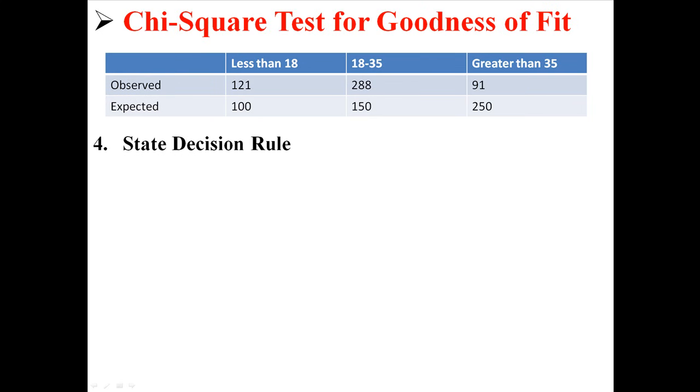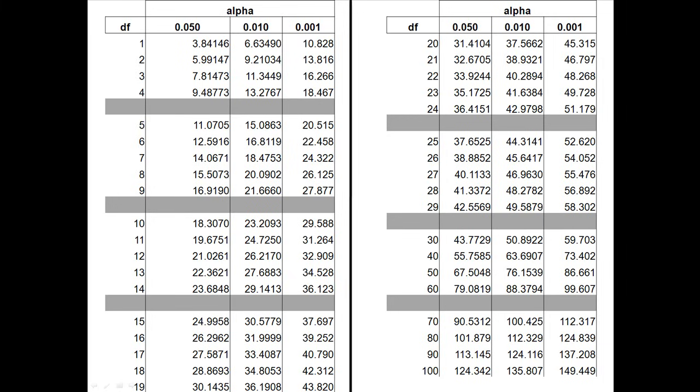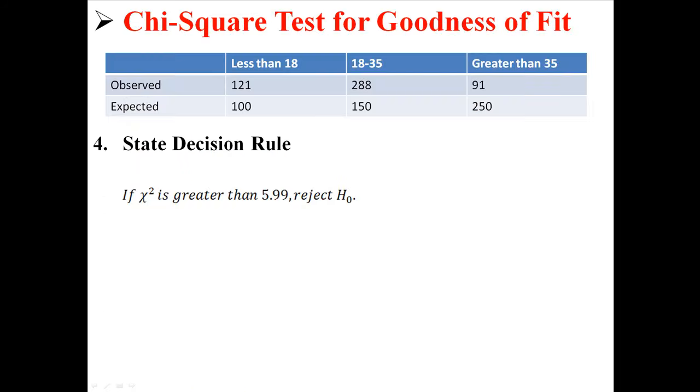We then use that to find our decision rule. We have this chi-square table, where we look up alpha 0.05 with 2 degrees of freedom, and we find 5.99147. So, we say, if the chi-square we calculate is greater than 5.99, we're going to reject the null hypothesis.